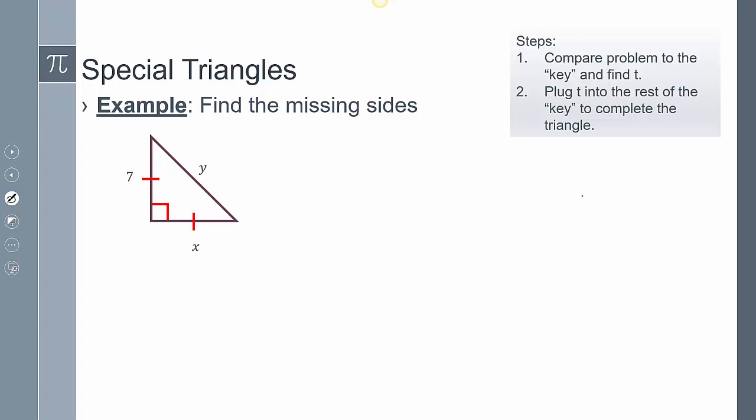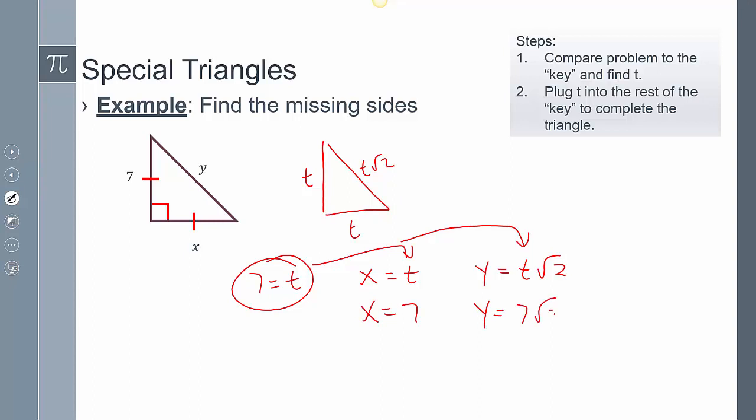Let's say here I wanted to find my missing sides. My special right triangle: we know 45, 45, 90. This is t, this is t, this is t root 2. I can set these equal to each other. I can say 7 equals t, x equals t, and y equals t root 2. Because I said 7 equals t, I can plug in t for those other values. So x is 7, and y is going to be 7 root 2, which is my answer.